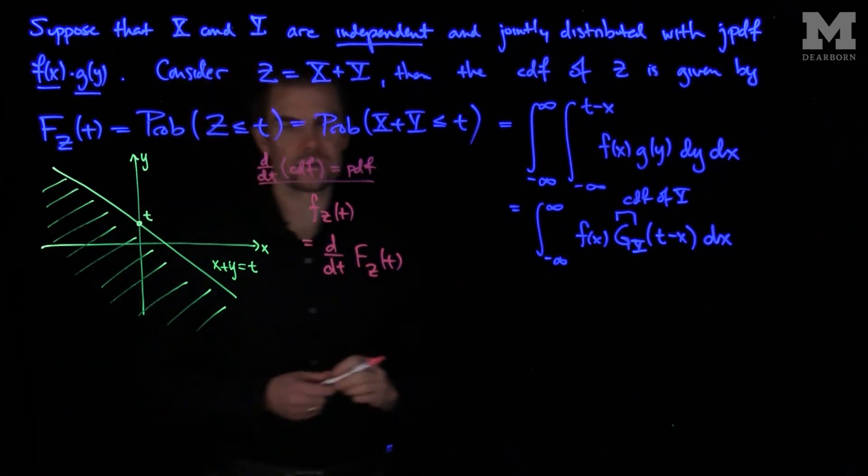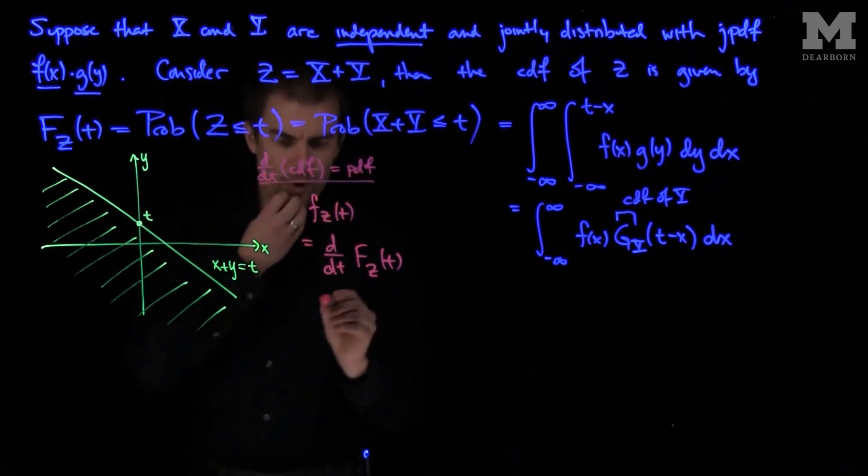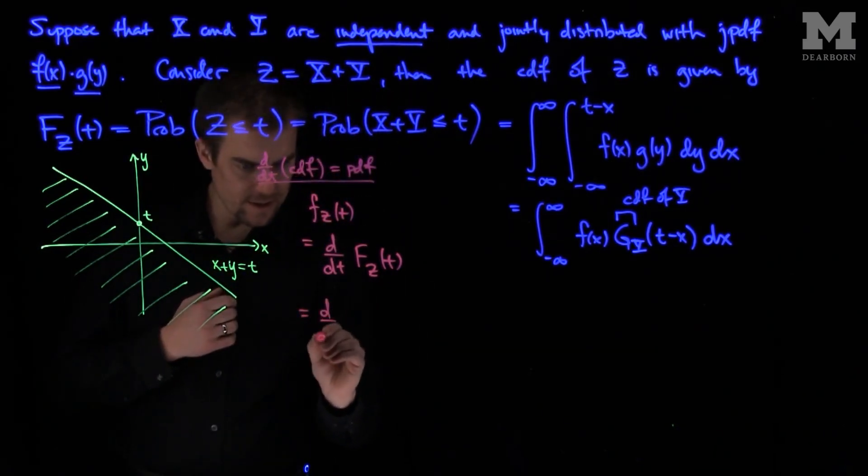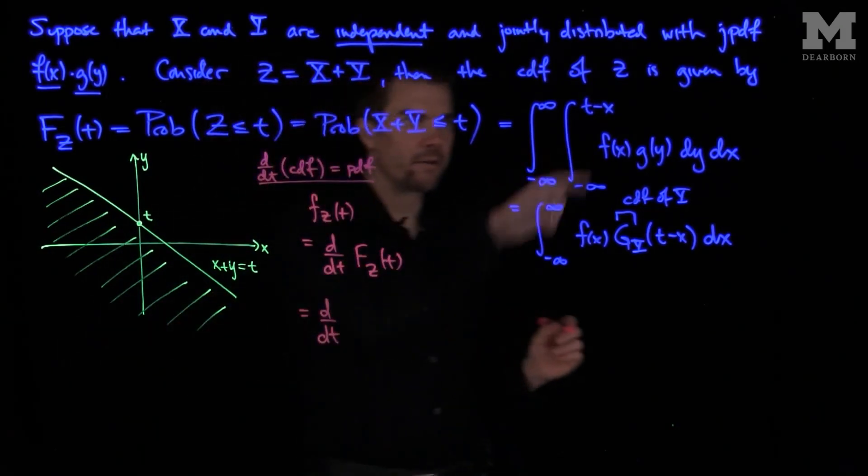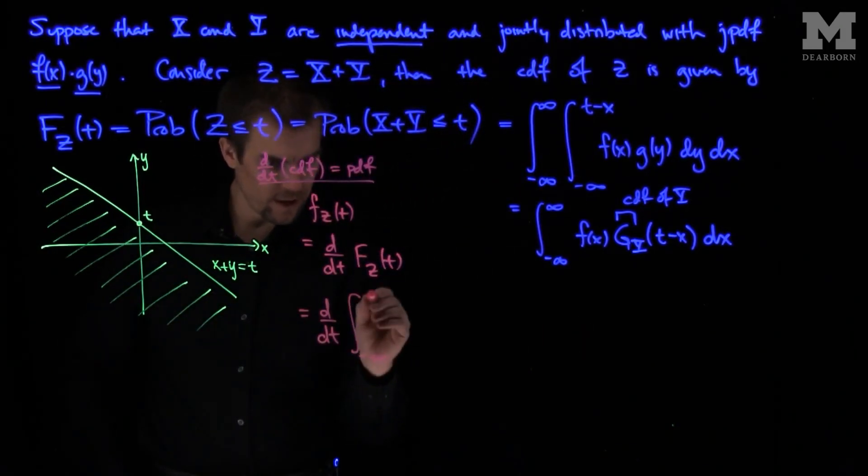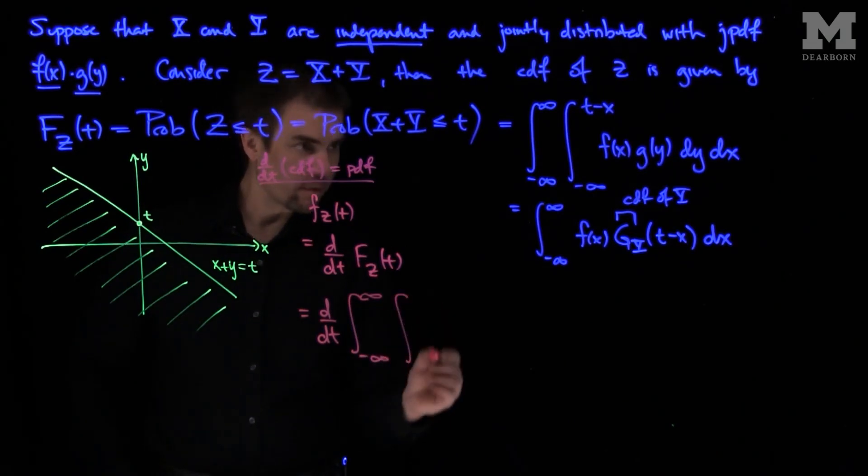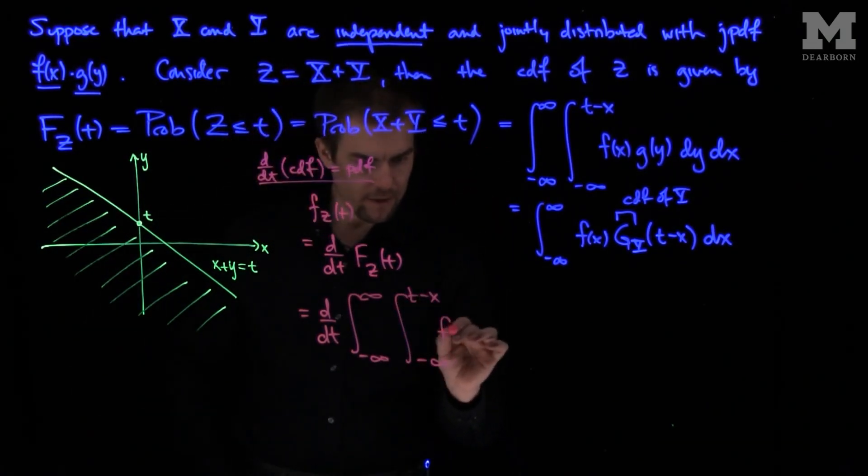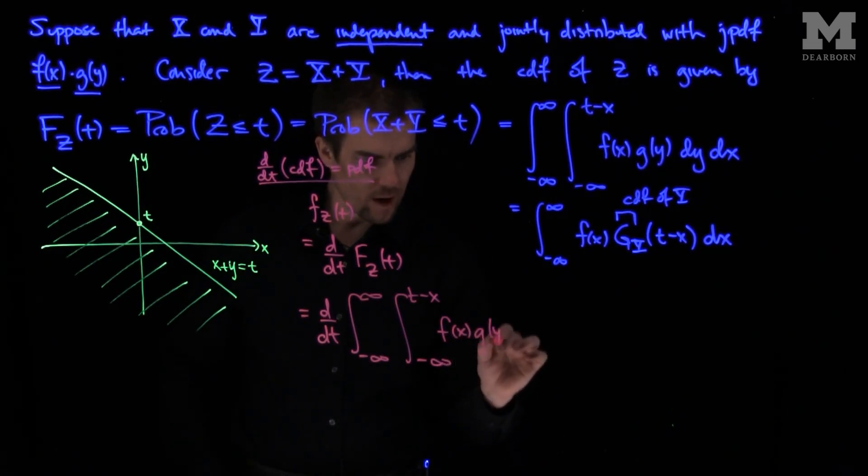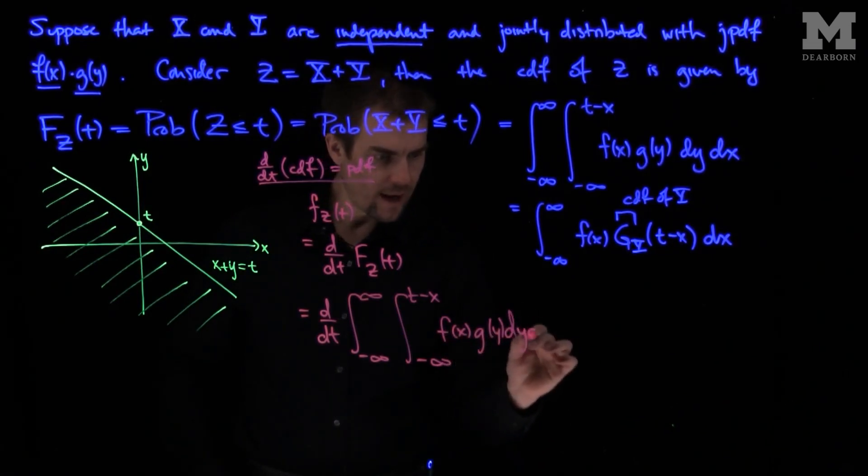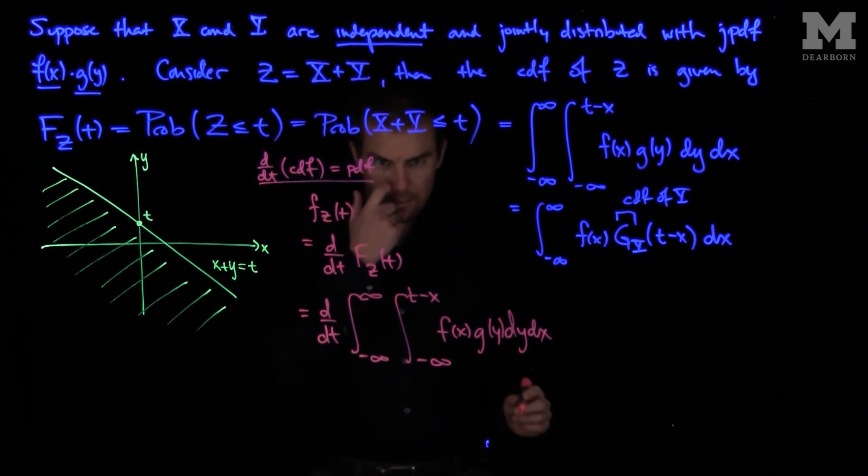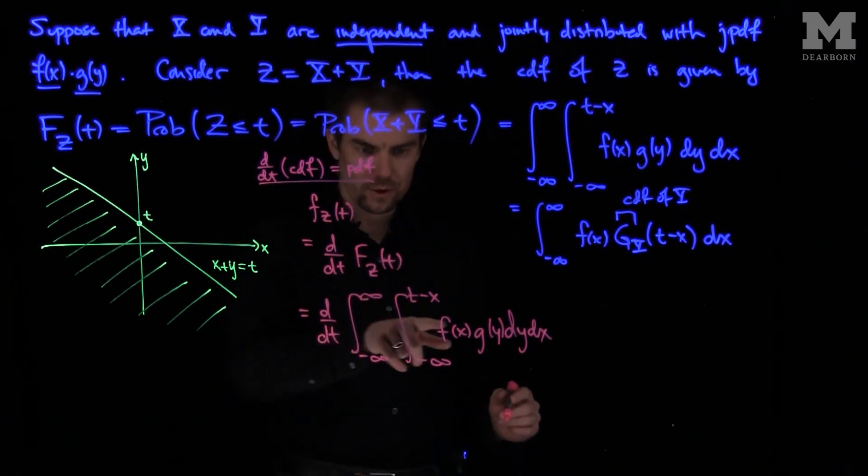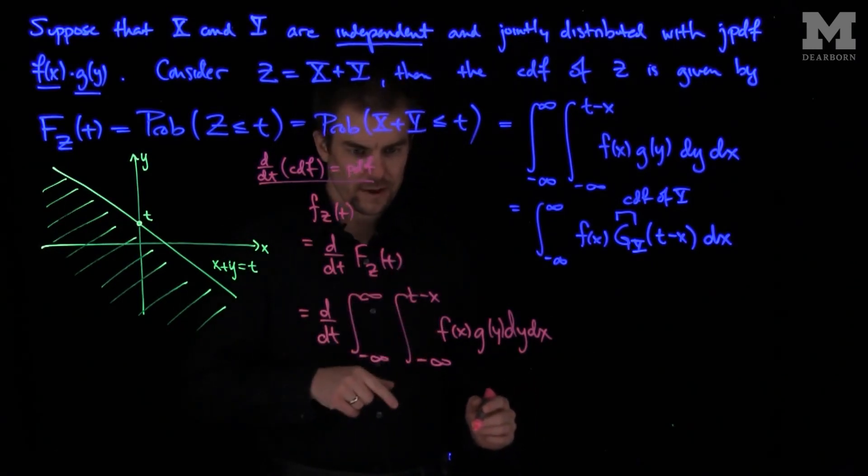And now we can write this as d by dt of this formula: the integral from negative infinity to infinity, the integral from negative infinity up to t minus x of f of x, g of y, dy dx. And by the fundamental theorem of calculus, I'll do the derivative of this innermost integral with respect to t.